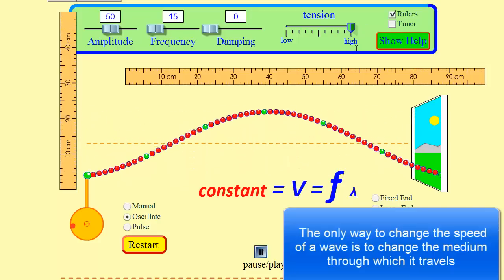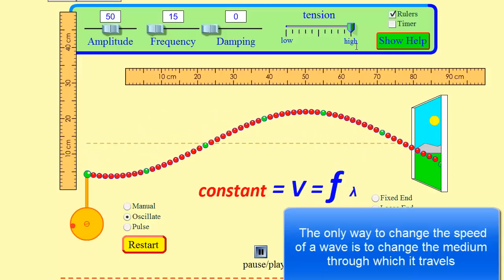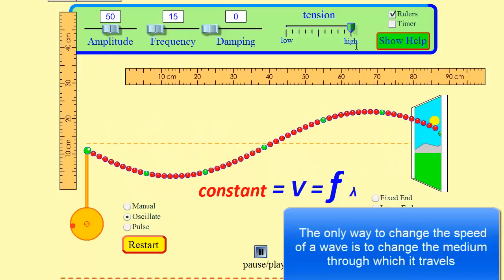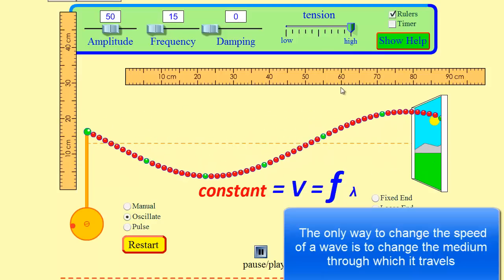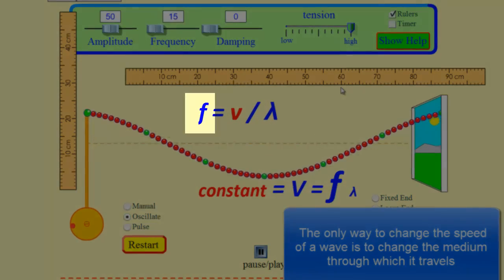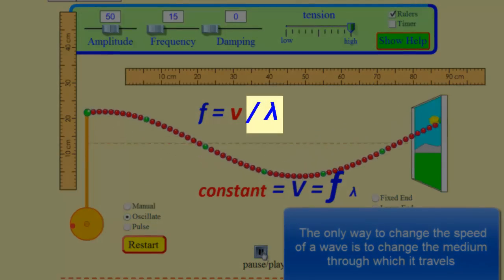Notice the wavelength elongates. So the velocity of the wave is independent of f and lambda, even though it suggests that it's dependent on the equation. Velocity is constant unless the medium changes. Frequency and wavelength are inversely related to each other.